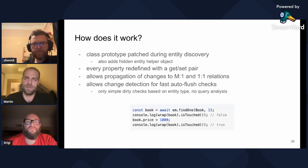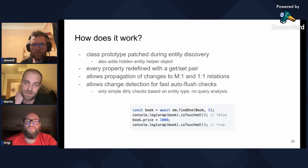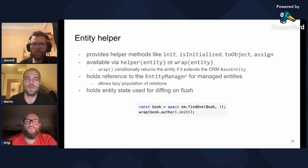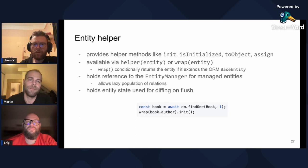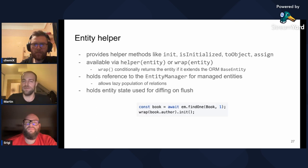So how does it actually work? This requires prototype modification, which happens during entity discovery. We need to do it on prototype level so it works for new entities as well, not just those created by the entity manager. A hidden entity helper object is created for each entity instance, and all properties are redefined with getters and setters so we can detect changes and handle propagation. This hidden entity helper object provides handy methods like init, toObject, or assign. You can access them through helper or wrap functions, or by extending the base entity class. For managed entities, this object also holds the snapshot used for change computation on flush, and holds the reference to the entity manager for lazy populating.